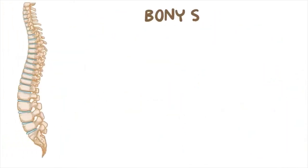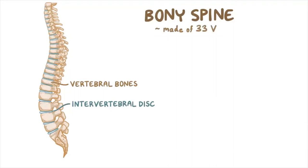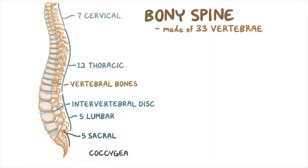The bony spine is made of vertebral bones with intervertebral discs between adjacent vertebrae. The spine has 33 vertebrae divided into 5 regions: the cervical region has 7, the thoracic has 12, the lumbar has 5, the sacral has 5, and the coccygeal region is made up of 4 fused vertebrae.